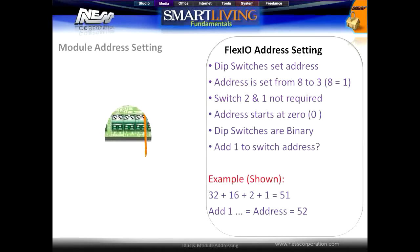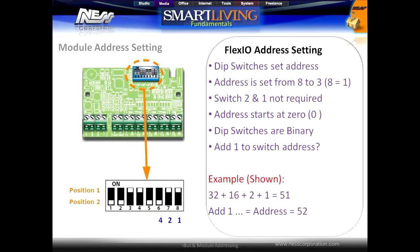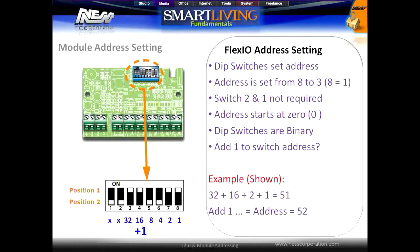The Flex 5 module is addressed using the onboard DIP switches, using switches 8 to 3, with switches 1 and 2 not being used. As depicted by the diagram, each switch corresponds to a binary digit, and combinations of these switches add up to the address. It should be noted that with all switches off, a value of 0 equals module number 1, meaning that for any value you need to add 1 to get the module's address.